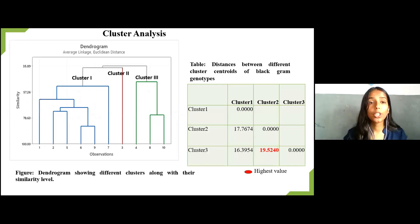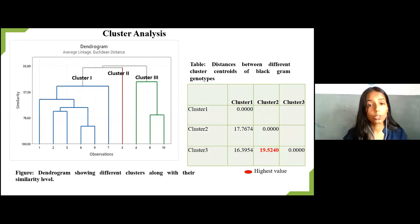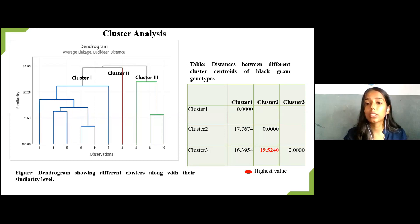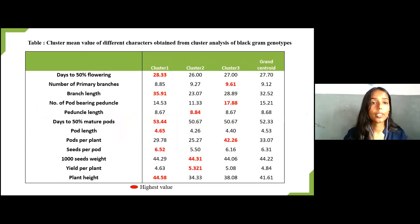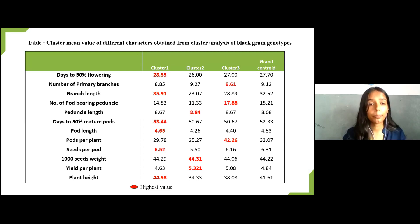Cluster analysis was done through the average linkage method. Results indicated sufficient variability among genotypes, distinctly grouping them into three different clusters. Cluster 1 was found to be the largest, having six genotypes. Cluster 2 was a mono-genotypic cluster, whereas Cluster 3 comprised three genotypes, as shown in the dendrogram. Inter-cluster distance between Cluster 2 and Cluster 3 was found to be maximum, indicating wider genetic variability. Cluster 1 represented late flowering, late maturity, high branch length, high pod length, high seeds per pod, and high plant height.